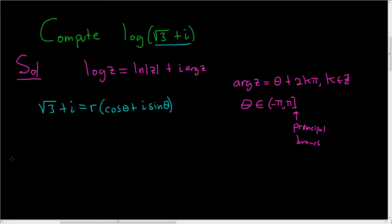And in this case, we can simply find r by taking the square root of the sum of the squares of the real and imaginary parts. So if we square the real part and we square the imaginary part, we end up with 3 plus 1, which is 4.